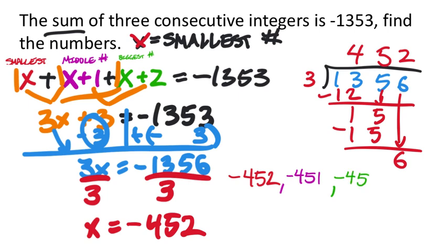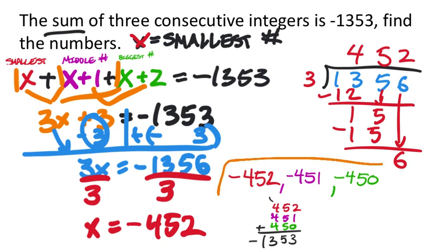Now let's check by adding 452, 451, and 450 together. In the ones place: 2+1+0 = 3. In the tens place: 5+5+5 = 15, carry the 1. In the hundreds place: 4+4+4 = 12, plus the carried 1 = 13. So the total is 1,353, and with the negative sign, that matches negative 1,353. We've arrived at our answer.